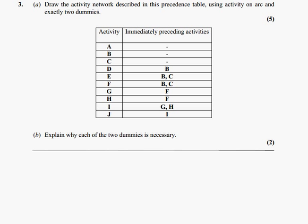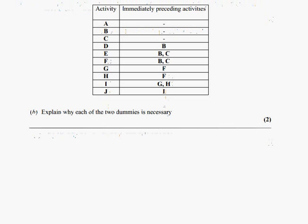Okay, so here's question three on the January 2009 D1 paper. This is a critical path analysis type question, and it's basically getting us to draw an activity network for a precedence table, and then we're going to talk about the dummies.